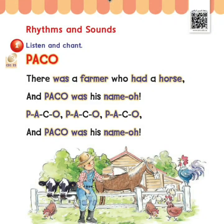Rhythms and Sounds. Exercise 1: Listen and Chant — Paco. There was a farmer who had a horse, and Paco was his name-o. P-A-C-O, P-A-C-O, P-A-C-O, and Paco was his name-o.